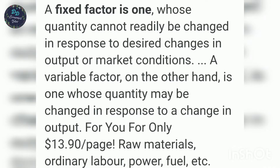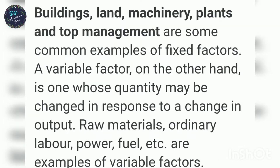Fixed factors are those whose costs do not vary directly with output — they do not change whether the level of output increases, decreases, or becomes zero. Variable factors are those that change in the short run. Examples of variable factors include raw material, transport, communication, and casual labor. If output increases, variable factor increases; if output decreases, variable factor decreases; if output is zero, variable factor is zero.